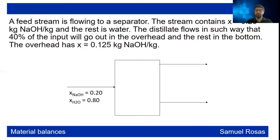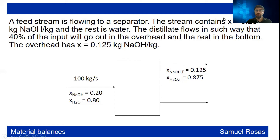The block has two outputs: one at the top (overhead) and one at the bottom. You put in the extra information: 0.125 NaOH at the top and the rest water. Since the stream flow is not given, we assume 100 kilograms per second as our basis of calculation. The unknowns are the top flow rate, the bottom flow rate, and the bottom composition — likely what is being asked.